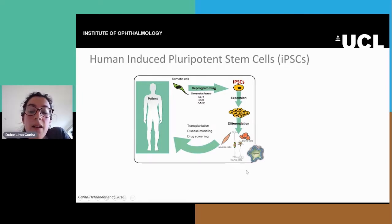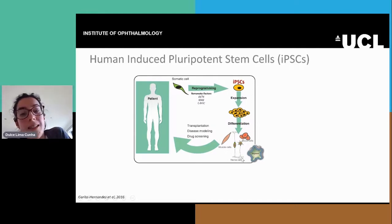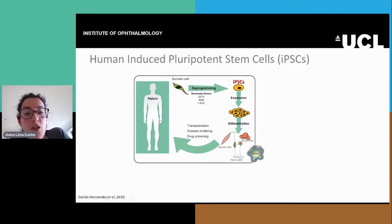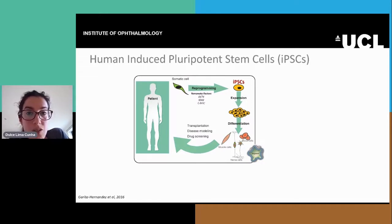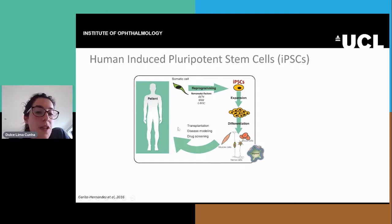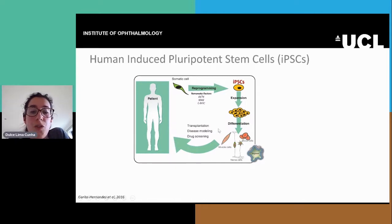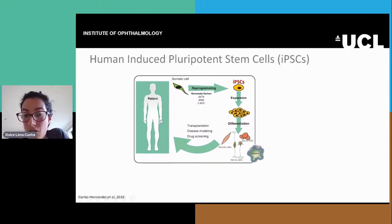Lately there's also been a boom in differentiating these cells into organoids, which are more complex 3D structures that sort of mimic tissue — not just cells, but the whole tissue. These cells have the advantage of being used for transplantation to the patient, but have mostly been used for disease modeling and drug screening to allow for therapies for the patients.